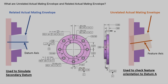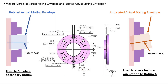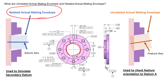Let's take a quick look at this drawing here and identify where we might utilize these two separate envelopes. From a high level, the related actual mating envelope is an envelope that represents a feature of size — that might be a cylindrical feature of size or a width feature of size. For this example, we're going to picture a cylindrical feature of size. We're going to utilize the related and unrelated actual mating envelopes to assess this feature.